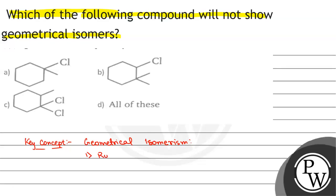First of all, rotation must be restricted. To show geometrical isomerism, three conditions must be fulfilled. First one is rotation must be restricted.